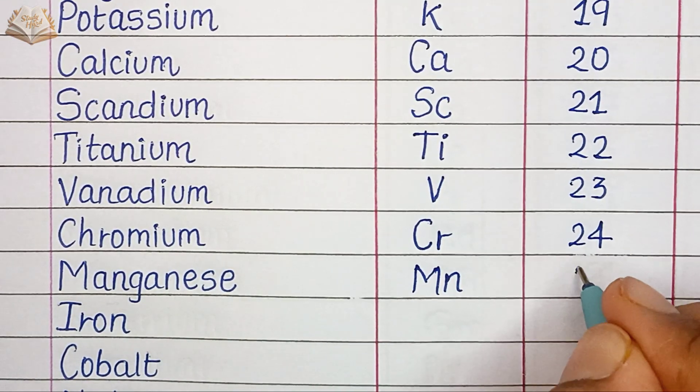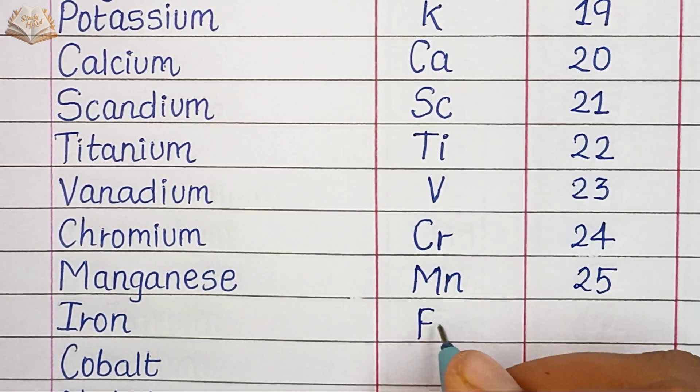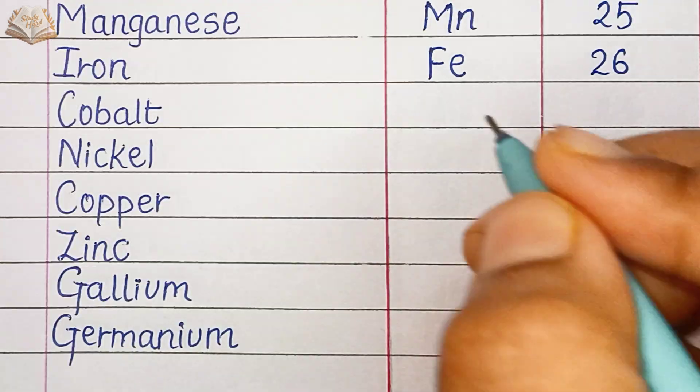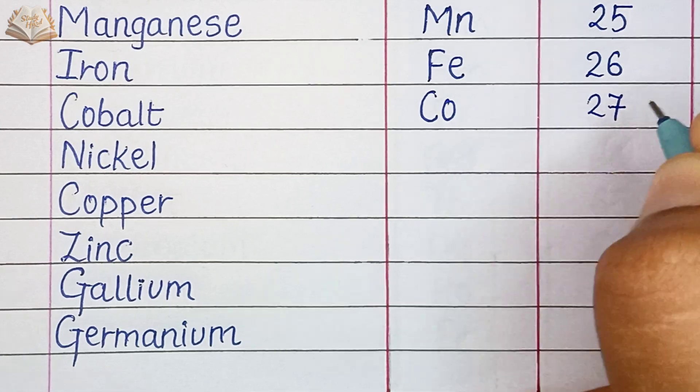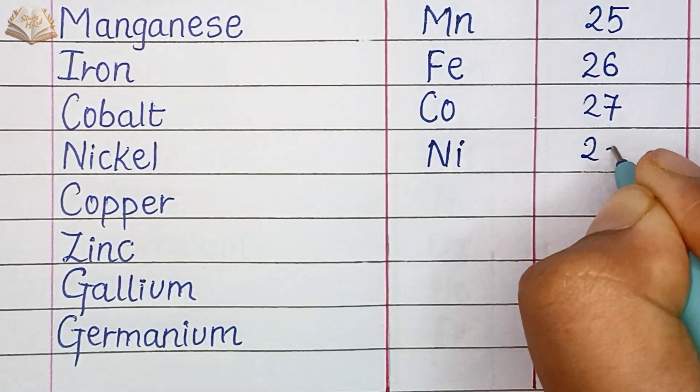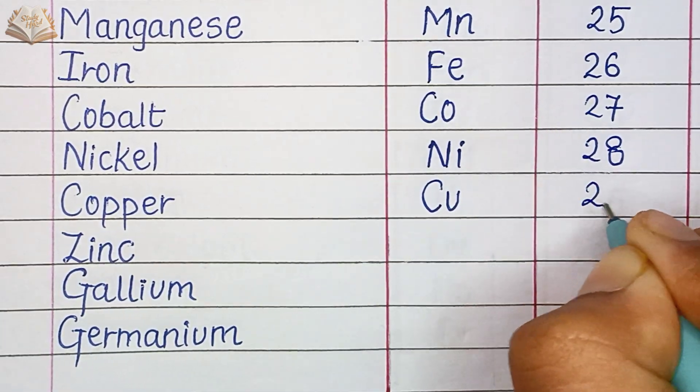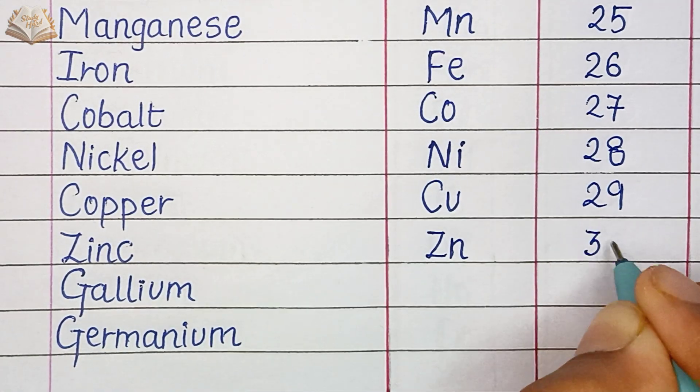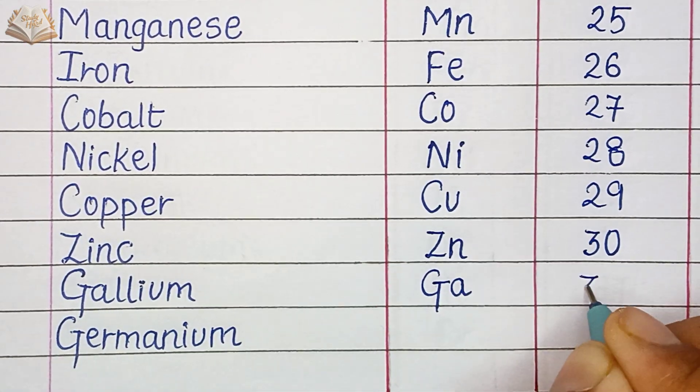Iron, Fe, atomic number 26. Cobalt, Co, atomic number 27. Nickel, Ni, atomic number 28. Copper, Cu, atomic number 29. Zinc, Zn, atomic number 30. Gallium, Ga, atomic number 31.